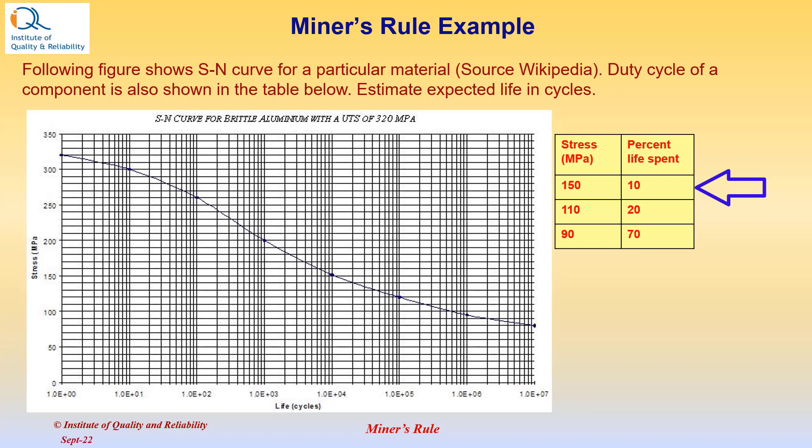As you can see from the duty cycle table, the stress level of 150 MPa is active for about 10% of the time, 110 MPa stress is applied for 20% of the time, and 90 MPa stress is applied for 70% of the time.